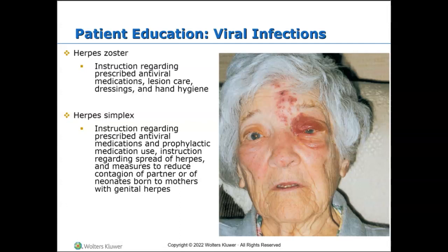Regarding viral infections: herpes zoster treatment has three major objectives — treat the acute viral infection, treat the acute pain because it is very painful, and prevent any type of post-herpetic neuralgia. We're going to use antiviral agents, oral corticosteroids, and adjunctive therapy that will be individualized for the patient. Pain management is definitely a key component.